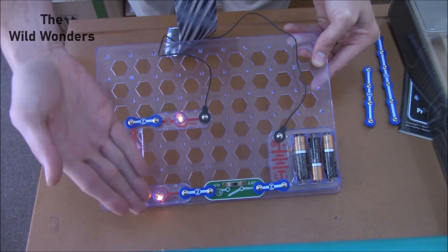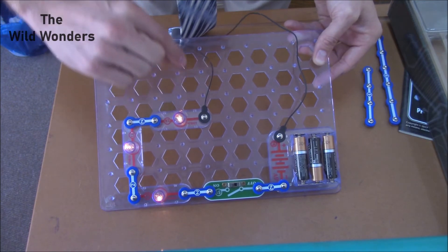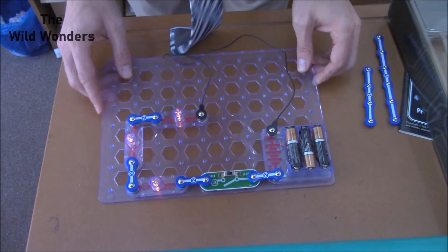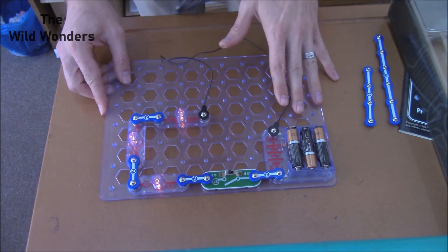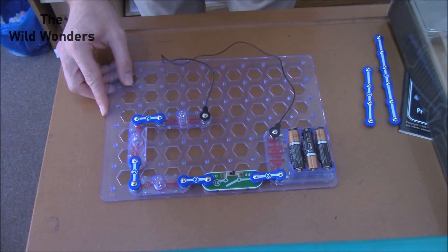The current starts flowing here from ourselves through the switch, then past our first light bulb, through our second light bulb, through our third light bulb, through the connecting wire, and back towards ourselves. This is now a closed circuit. And there we have an open circuit as the switch is off.